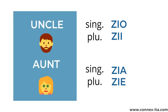Let's continue with uncle, which is zio in the singular and zii in the plural. For aunt we use the same word but in the female gender, so it's zia, singular, and zie, plural.